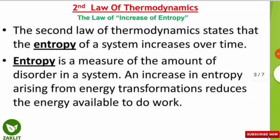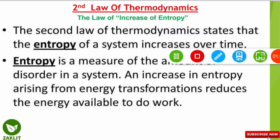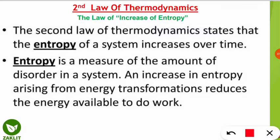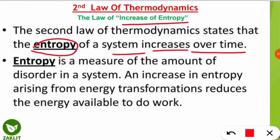Today we are going to learn about the second law of thermodynamics, also known as the law of increase of entropy. This law states that the entropy of a system increases over time. Entropy is a measure of the amount of disorder in a system — the degree of randomness is called the entropy of any system.